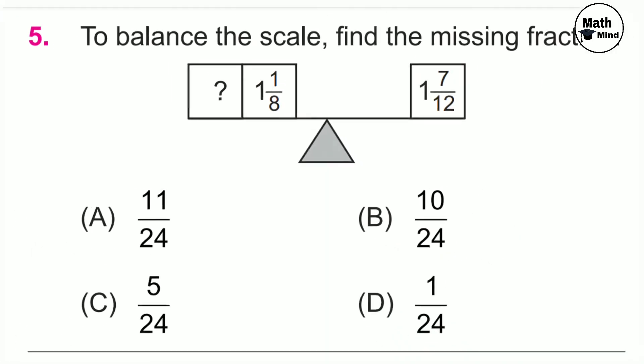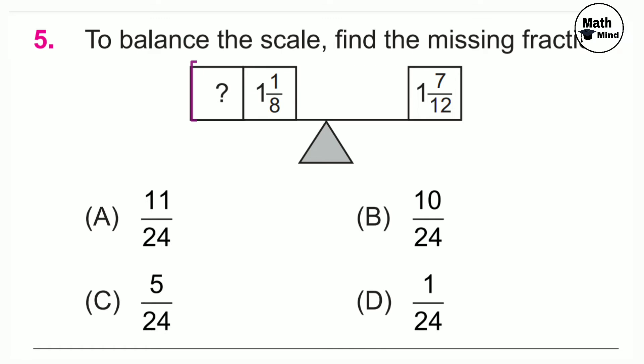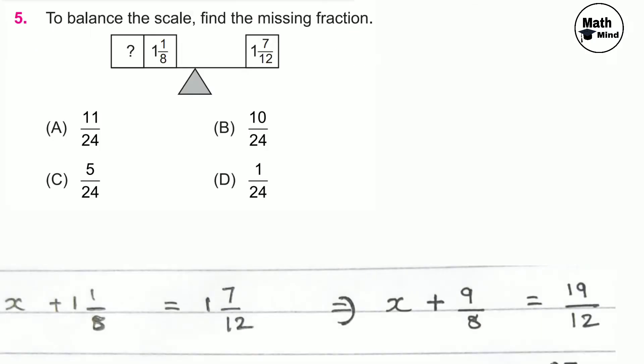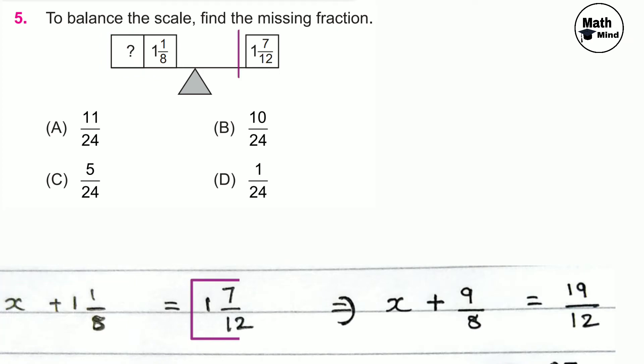Question number 5: to balance the scale, find the missing fraction. The scale is balanced, so we can form an equation because both sides are equal. Let the blank be x. Then x plus 1 and 1/8 equals 1 and 7/12.